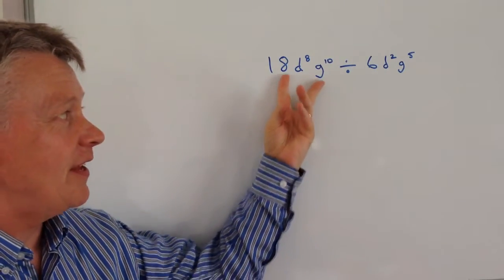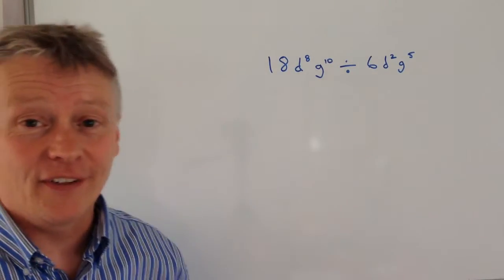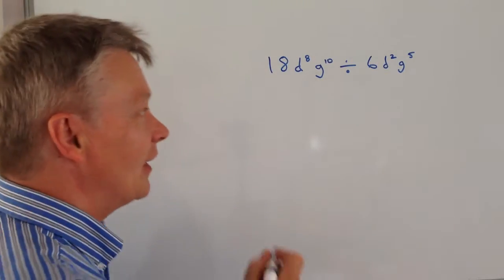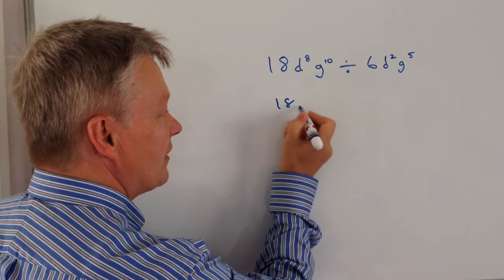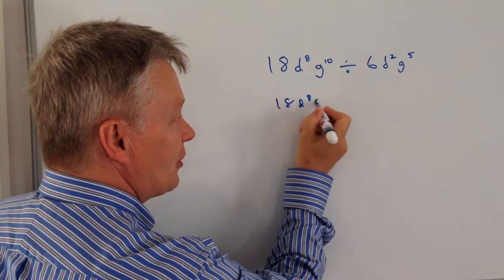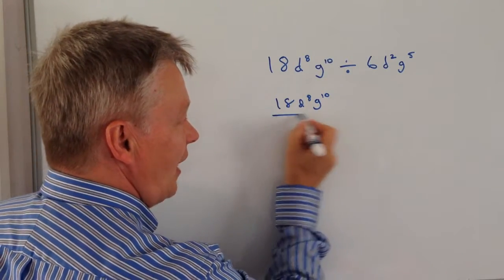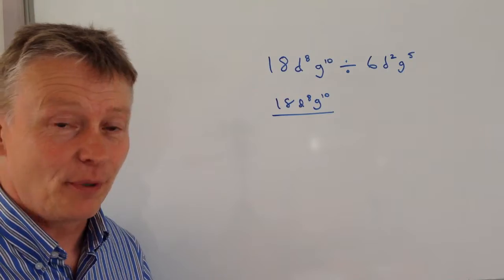The main thing is we're saying that this divided by this. So one of the better ways of doing that is actually to rewrite it as a fraction, because effectively a fraction is exactly the same as saying divided by.